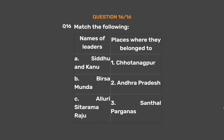Question 16: Match the following names of leaders with the places where they belong. A: Siddhu and Kanu — 1: Chhotanagpur. B: Birsamunda — 2: Andhra Pradesh. C: Alluri Sita Rama Raju — 3: Santhal Parganas. Option A: A-3, B-2, C-1. Option B: A-2, B-3, C-1. Option C: A-1, B-3, C-2. Option D: A-3, B-1, C-2.